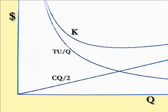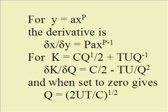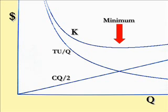Looking at some calculus, this equation takes the form where we take down the power, multiply it, and decrement the exponent by one unit. Applying that to our handy version of the equation, we take the derivative — the slope — set it equal to zero where the minimum is, and find that the optimal quantity is the square root of two times the usage times the transaction cost divided by the carrying cost.